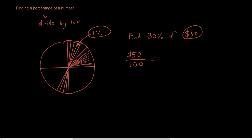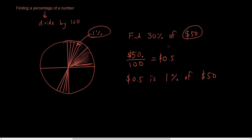What's fifty divided by a hundred? Well, using the shortcut we learned previously, move the decimal point to the left, it'll be zero point five dollars. Zero point five dollars is one percent of fifty dollars, because we divided fifty by a hundred, and that gives us one percent — one out of a hundred of fifty is zero point five. So if we want thirty percent, we then multiply zero point five by thirty, and that's going to give us fifteen dollars, which is thirty percent of fifty dollars.